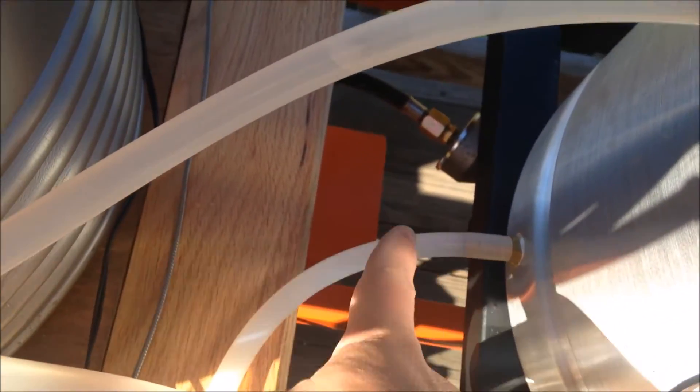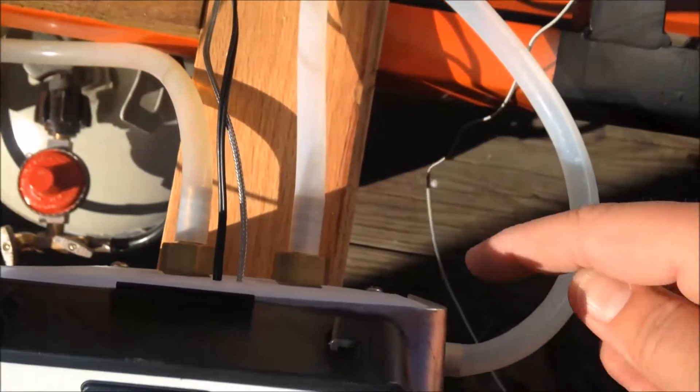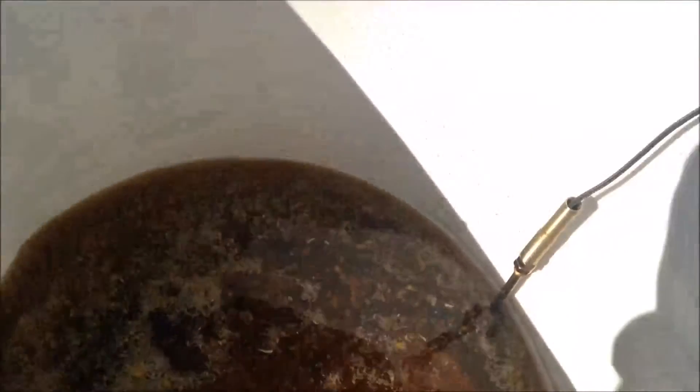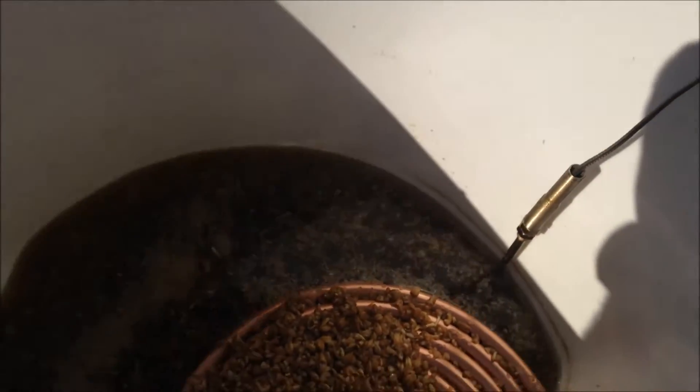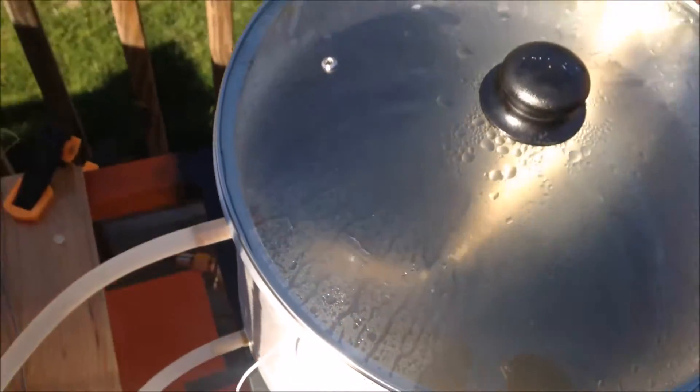Water runs from the bottom of the hot liquor tank to pump two, out of pump two, up into the copper coil, and back out and back to the hot liquor tank.